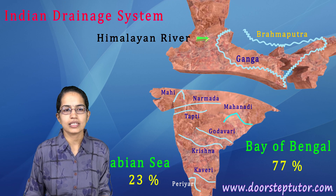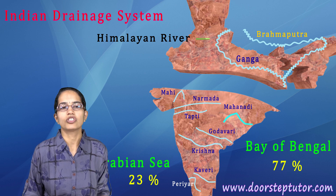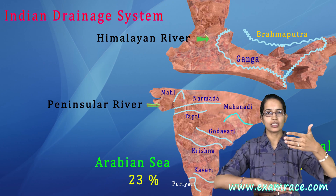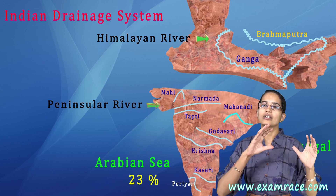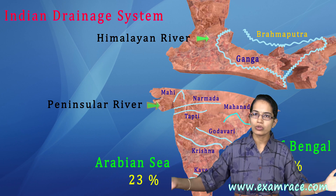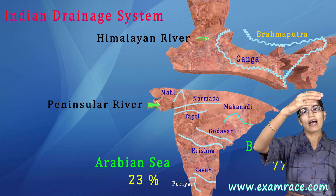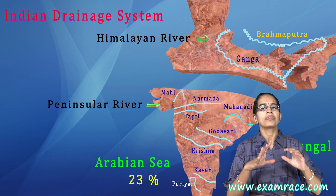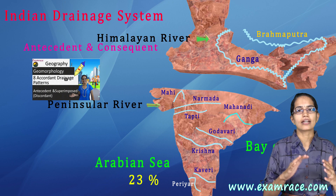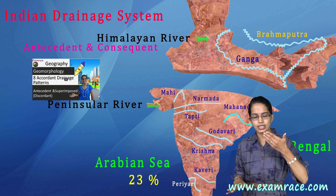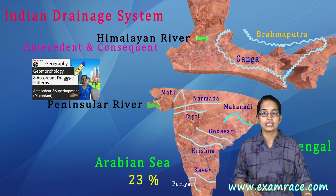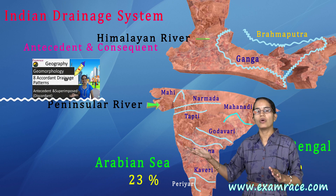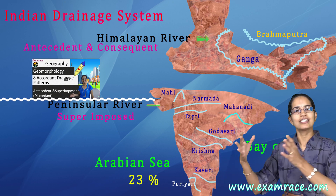The next demarcation is between Himalayan rivers of north India and peninsular rivers of south India. In the Himalayan drainage, rivers are perennial — fed throughout the year by melting glaciers. Himalayan rivers also exhibit antecedent and consequent drainage systems, in contrast to peninsular rivers which mainly show superimposed drainage.